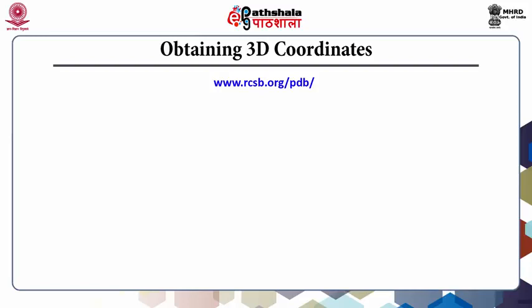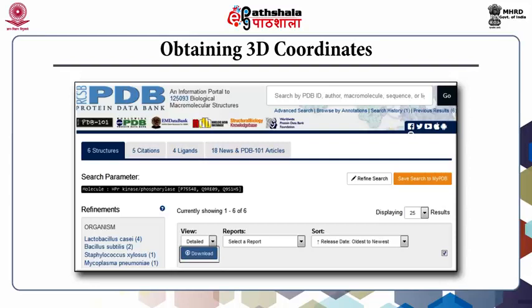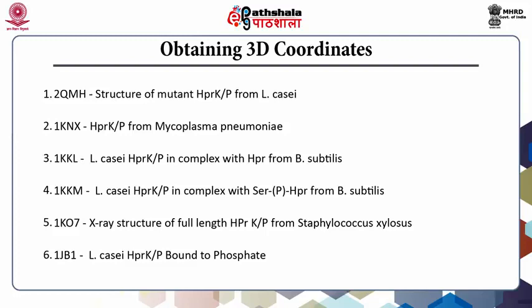To obtain 3D coordinates of HPRKP and HPR, visit PDB at RCSB and start typing HPR kinase in the search text box. The text box will suggest recommended names such as UniProt molecule names or ontology terms. The first suggestion for UniProt molecule name, HPR kinase phosphorylase, matches our requirement. Simply click on the first suggestion or enter the complete name HPR kinase phosphorylase and click the Go button. Scroll down the list to inspect each of the six entries.